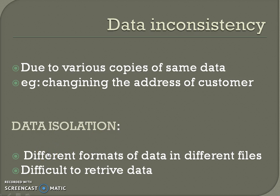Data isolation is another issue. In the traditional file processing system, data is scattered in various files, possibly in different formats. It is difficult to write new application programs to retrieve the appropriate data — this is called data isolation. In DBMS, data resides at the same storage location, making it easy to write new programs to retrieve the appropriate data.